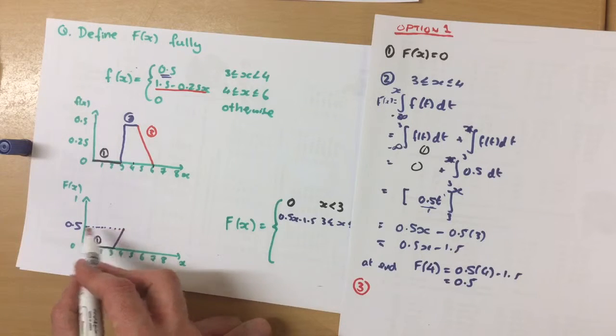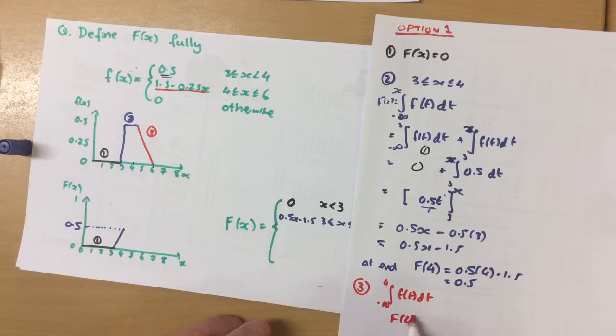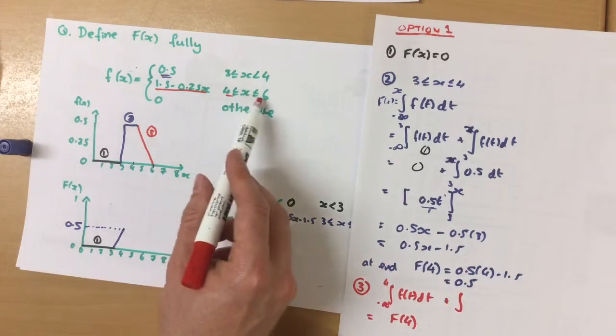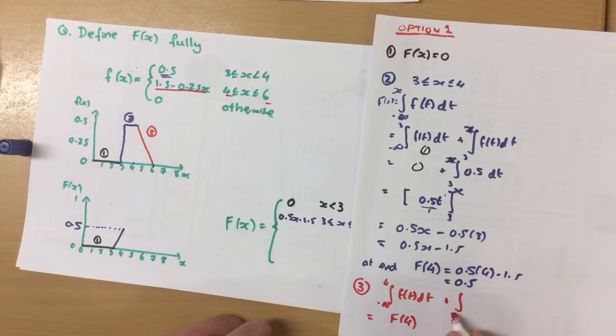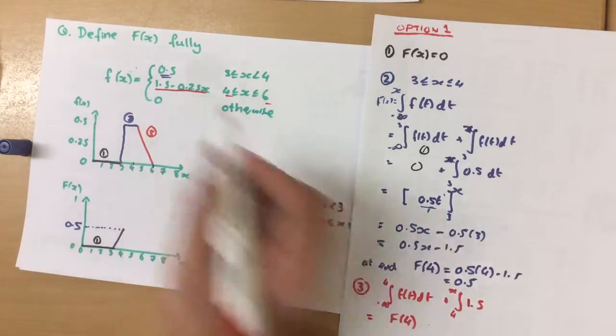So our next section will start at 0.5. So between 4 and minus infinity, so between 4 and minus infinity, of our function, which is a cumulative up to 4, that has a value of 0.5. Above that, in our next section, between 4 and 6, so from 4 up to some value of x, whatever it's going to be.